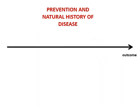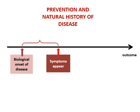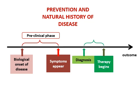Coming to the natural history of disease: first there is onset of the disease, then after some time the symptoms appear. The time period between the biological onset of disease and the appearance of symptoms is the preclinical phase. After symptoms appear, diagnosis occurs and then treatment starts. The period between diagnosis and start of treatment is the clinical phase.